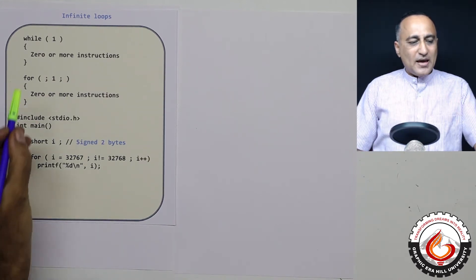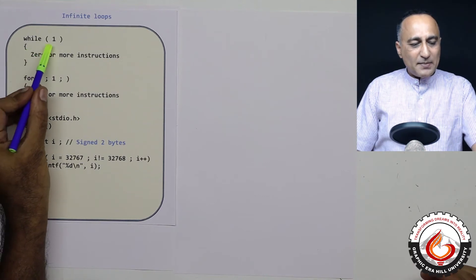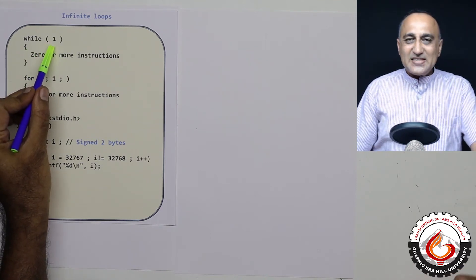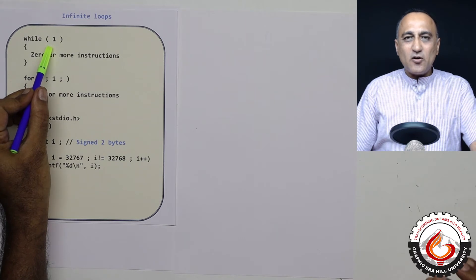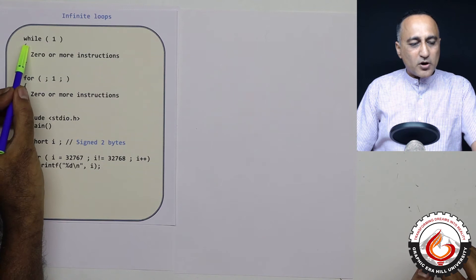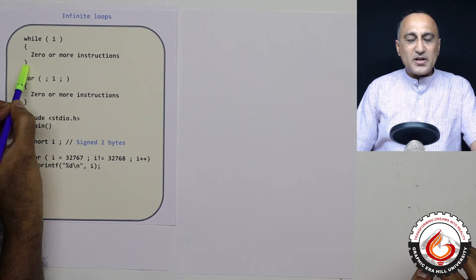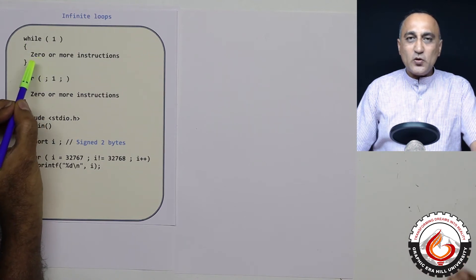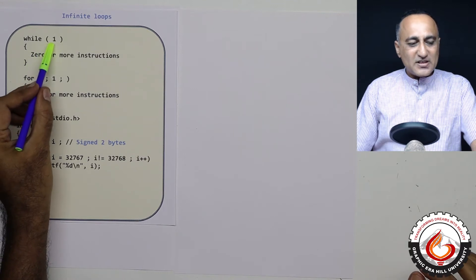So suppose I write while and I put one here, what happens is in C, any nonzero number is always true. So since this indicates always true, whatever instructions are in this particular body are going to execute endlessly because of this condition one.